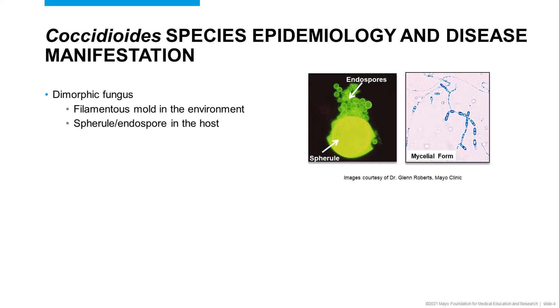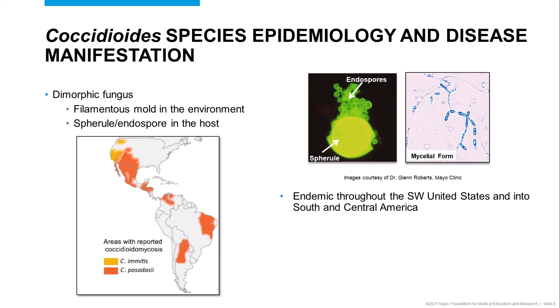Once in the patient, the arthroconidia develop into spherules, which are full of endospores, as you can see on the image to the upper right. Each of those endospores can individually develop into new spherules, continuing the infectious process. Coccidioides is endemic throughout the southwest United States, although its range has expanded and continues to expand into the upper northwest and into the mountain states.